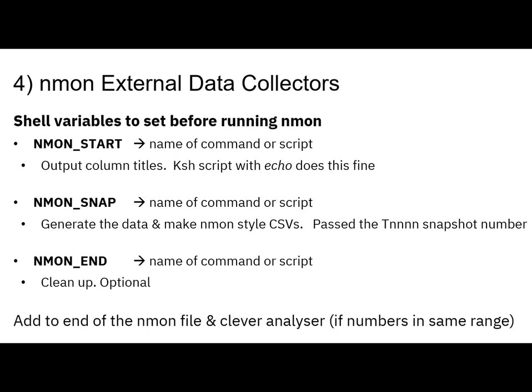Now here are the basics. You set some shell variables before you actually run N1. There's one called N1 start, and this is the name of a command or a script that you want to run. So when N1 starts up, it will call this script. That script has to output the column titles — a simple shell script with an echo will do this fine — and it needs to save those titles into a different file.